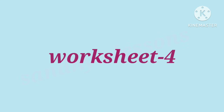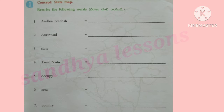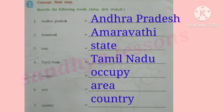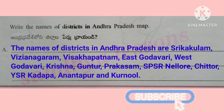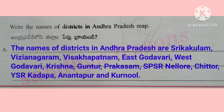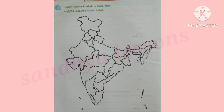Worksheet 4, Question 1: Rewrite the following words — Andhra Pradesh, Amaravati, State, Tamil Nadu, Occupy, Area, Country. Next question: Write the names of districts in the Andhra Pradesh map. The districts are Srikakulam, Vijayanagram, Vishakapatnam, East Godavari, West Godavari, Krishna, Guntur, Prakasam, SPSR Nellur, Chittur, YSR Kadapa, Anantapur, and Karnool. Question 2: Color Andhra Pradesh in the India map.